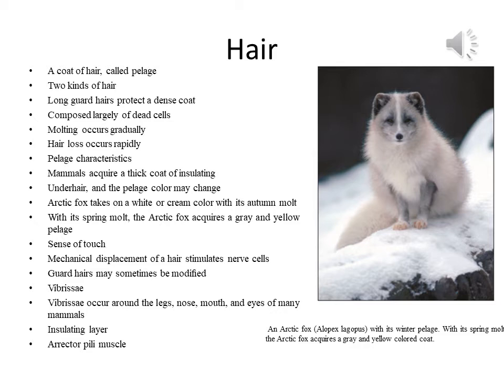Hair is also important for the sense of touch. Mechanical displacement of the hair stimulates nerve cells associated with the hair root, and the guard hairs may sometimes be modified into thick-shafted hairs called vibrissae. Vibrissae occur around the legs, nose, mouth and eyes of many mammals. Their roots are richly innervated and very sensitive to displacement. Air spaces in the hair shaft and air trapped between hair and the skin provide an effective insulating layer.